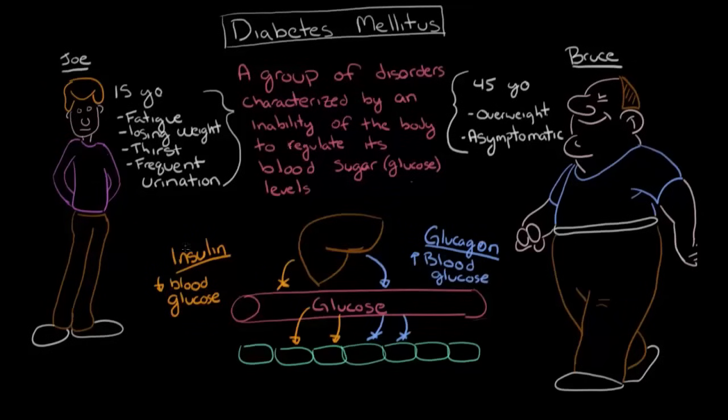Now in diabetes, this insulin here is either not being produced, or it's not functioning properly. It's not doing its job. And what happens is that the effect of glucagon here is amplified. So you get this increase in blood glucose levels. But if it's not around, this doesn't happen.